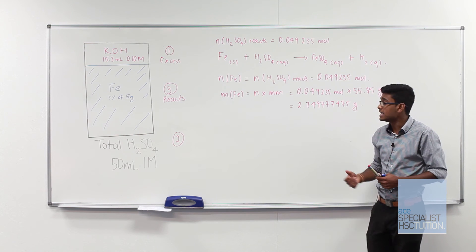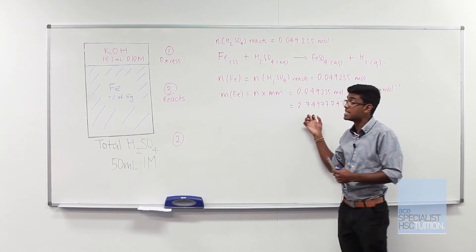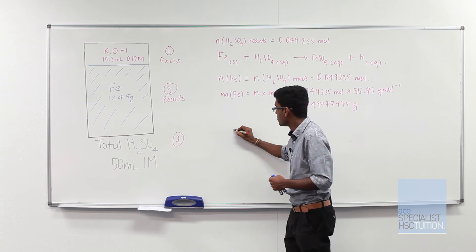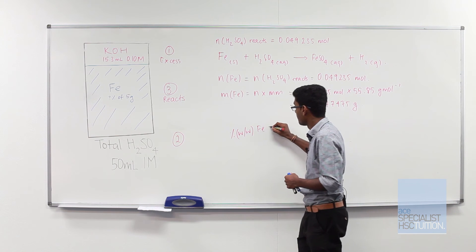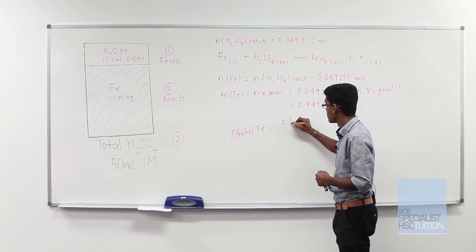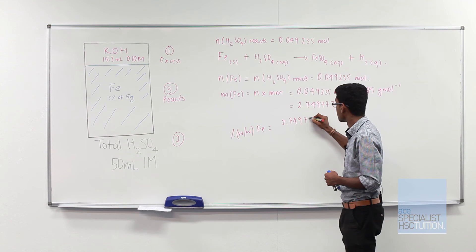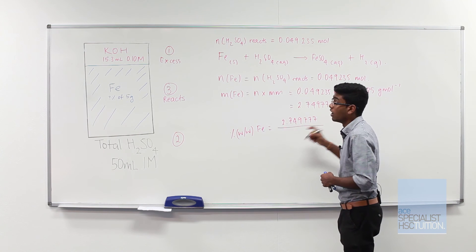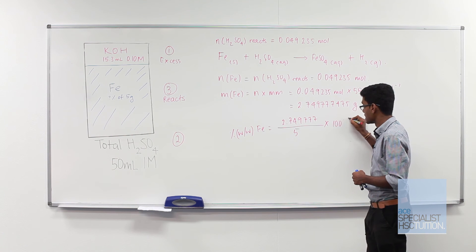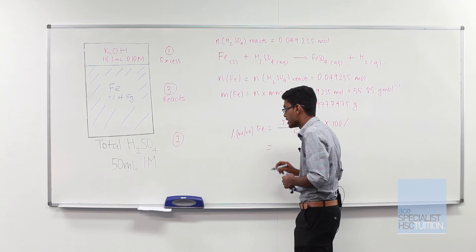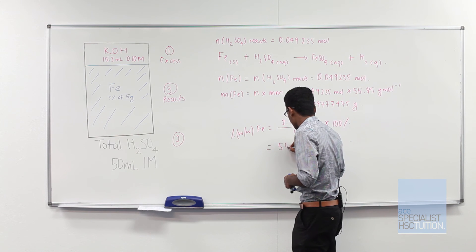Lastly we need to calculate this mass as a percentage of our total 5 grams. So the percentage weight per weight of iron is simply 2.749777 over the total which is 5 grams times 100%, and that gives us a final answer of 55%.